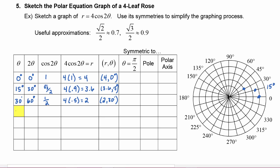Next we plug in 45 degrees. When we double that it becomes 90 degrees. The cosine of 90 degrees is zero, so r equals four times zero, which is zero. Our polar coordinate point is (0, 45°). We start at the pole, point towards 45 degrees, but go a distance of zero, so we put a point right at the pole. Let's go ahead and start connecting this curve, connecting the points in order.